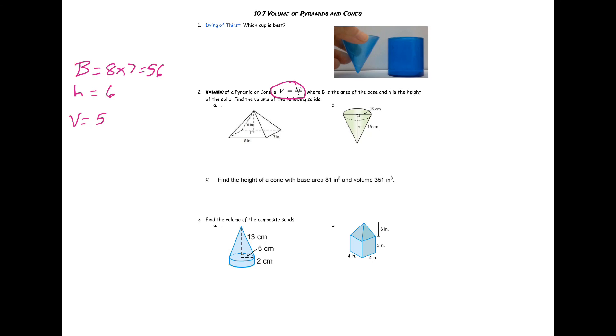Then we can use our formula: volume equals 56 times 6 divided by 3. You can just type that into your calculator for an answer of 112 inches cubed as our volume.